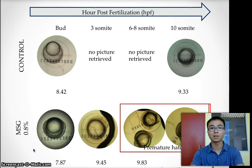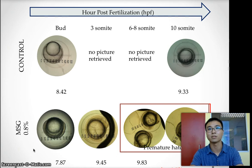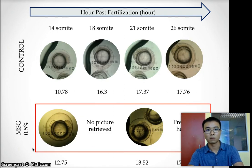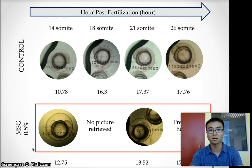We conducted another experiment to introduce a new, lower concentration of MSG to developing fish embryos. From 6 HPF onwards, we used another concentration of 0.005 g/ml, or 0.5% MSG. Looking between the fish embryo immersed in MSG and the control, there is not much difference overall.